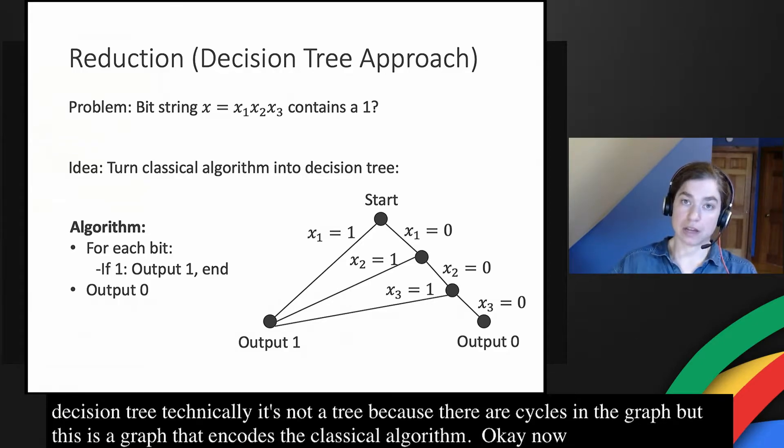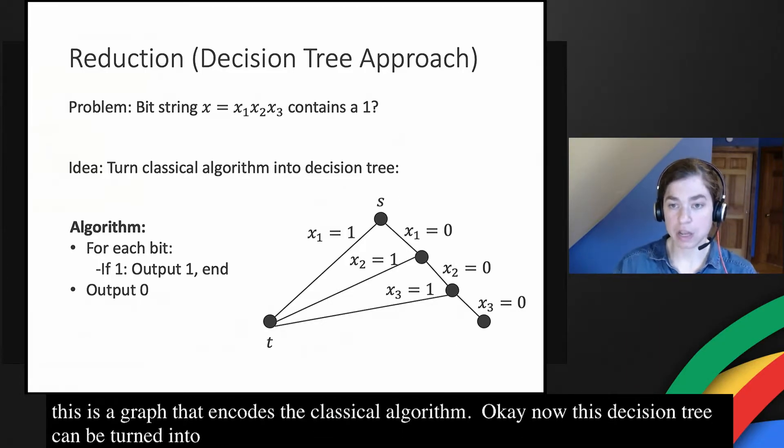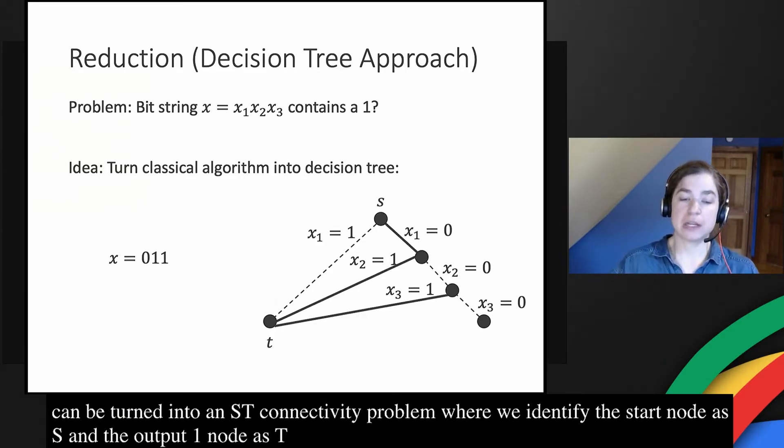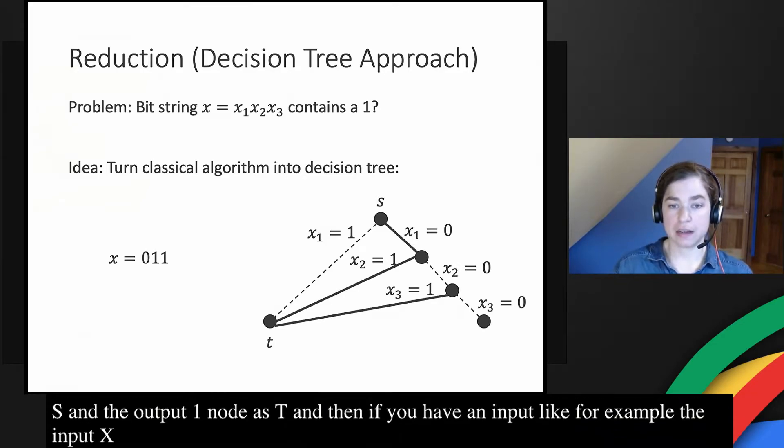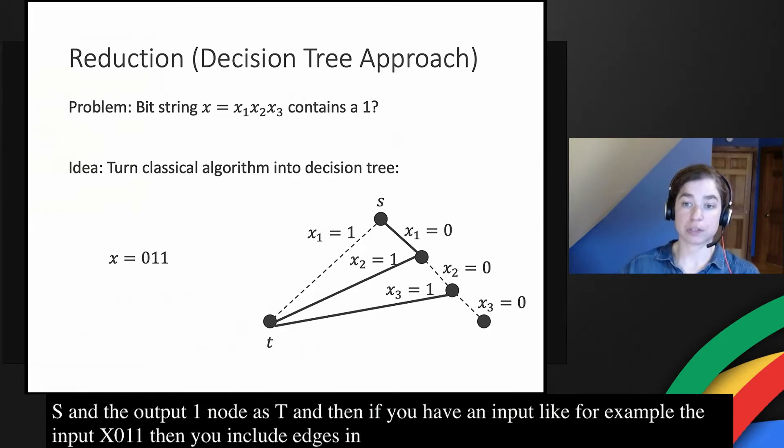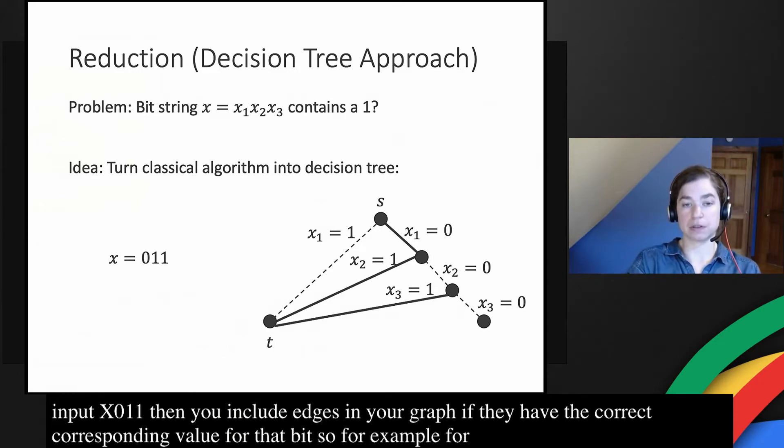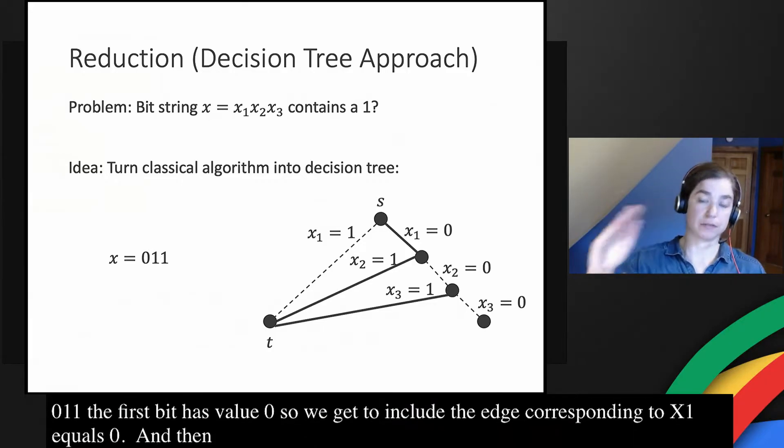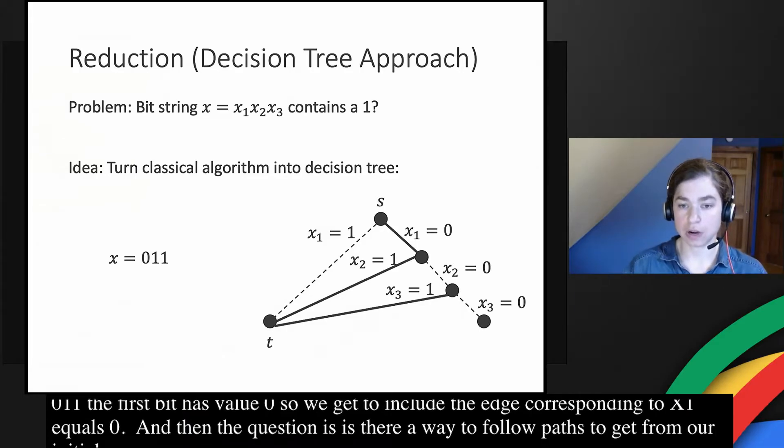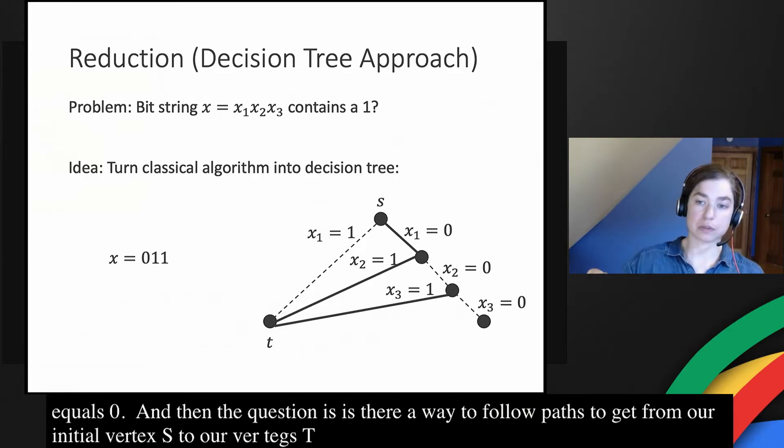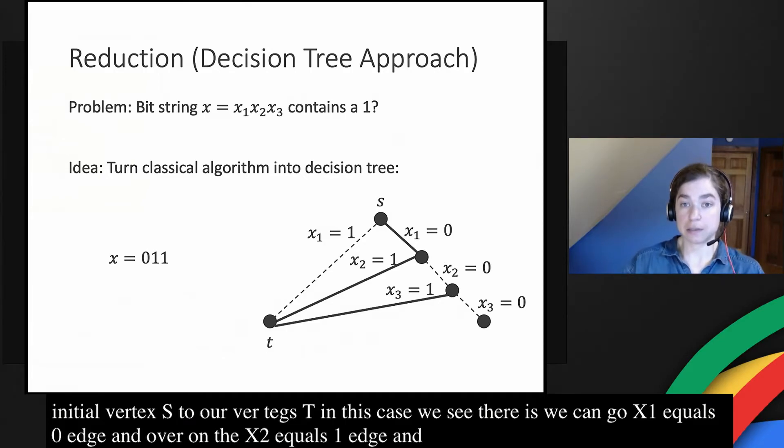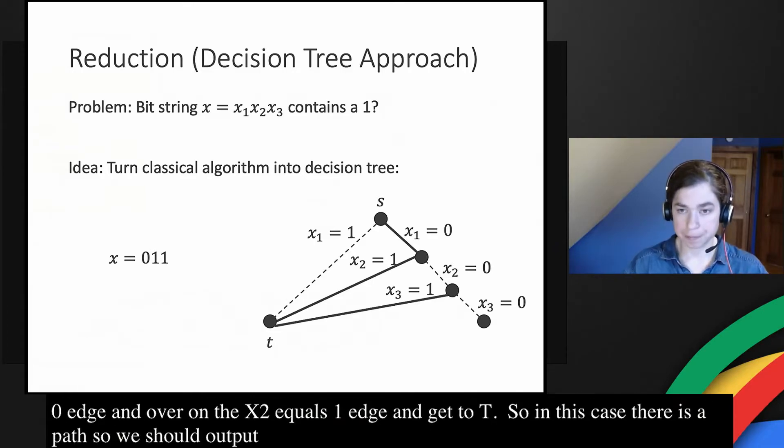This decision tree can be turned into an ST connectivity problem, where we identify the start node as s and the output one node as t. And then if you have an input, like for example, the input x=011, then you include edges in your graph if they have the correct corresponding value for that bit. For example, for x1 in this example, x equals 011, the first bit has value zero. So we get to include the edge corresponding to x1 equals zero. And then the question is, is there a way to follow paths to get from our initial vertex s to our vertex t. And in this case, we see that there is, we can go down the x1 equals zero edge and then over on the x2 equals one edge and get to t. So in this case, there is a path. So we should output one, which is what we want to output because there is a one in the bit string.